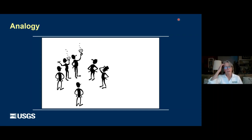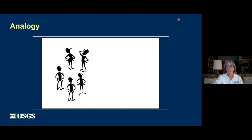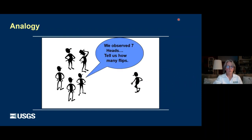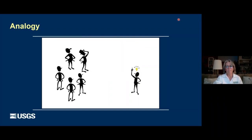We're going to imagine that we're at a party and the people say, let's play stump the statistician. I volunteer to go out of the room, and they flip a coin as many times as they want, then ask me to tell them how many times they flipped. So they flip it 10 times. They ask me to come back in and say, we observed seven heads — can you tell us how many flips we made? I think about it and say, you observed seven, and I know the probability of a fair coin flipping heads is 0.5. So I divide seven by 0.5 and give the answer of 14.